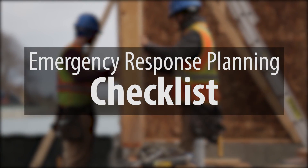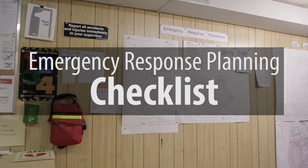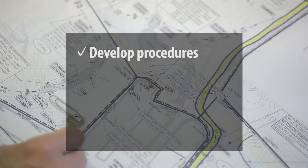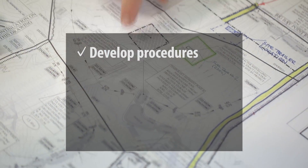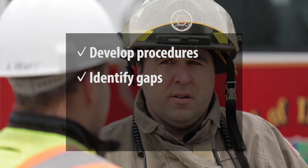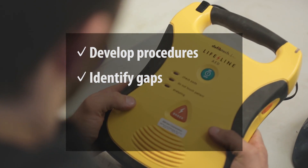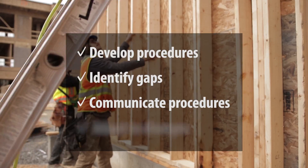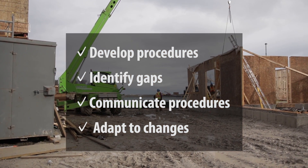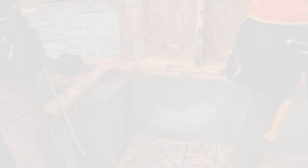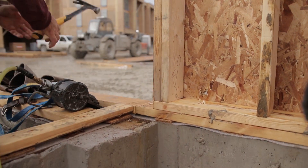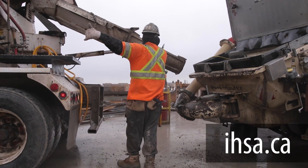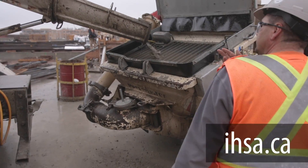The emergency response planning checklist should be used to develop project-specific emergency response and rescue procedures, identify the scope and limitations of external rescue support, develop contingencies if there are gaps, communicate procedures, and evaluate and adapt procedures to meet changing project activities. Information about emergency response planning for construction projects is available from the Infrastructure Health and Safety Association at IHSA.ca.